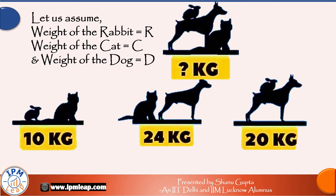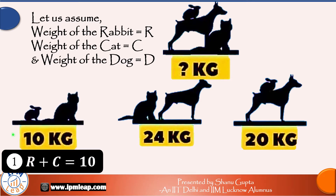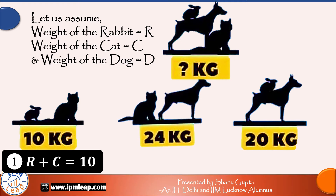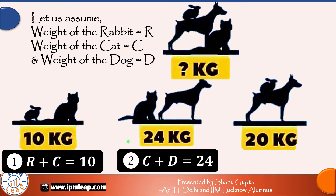Picture number one shows a rabbit and a cat and their combined weight is given to be 10 kgs. So our first equation is R plus C is equal to 10. Picture number two shows a cat and a dog and their combined weight is given to be 24 kgs. So our second equation is C plus D is equal to 24.